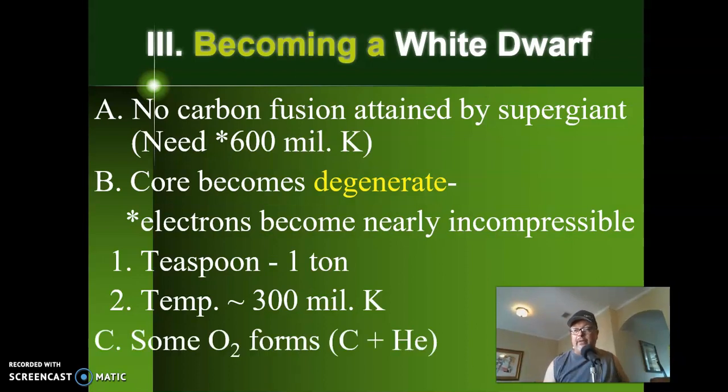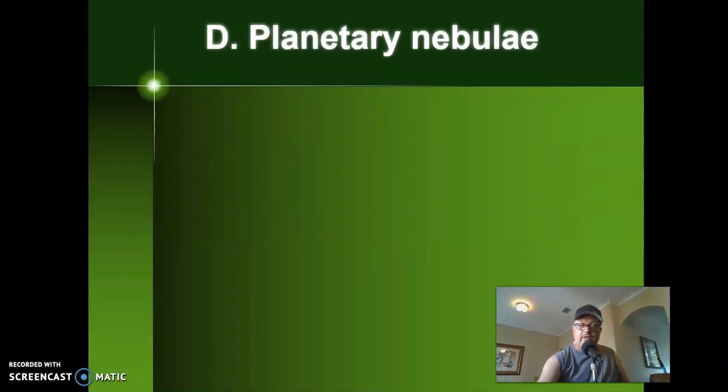Now, one interesting thing that can happen is that the core, which is made of carbon, you can have other types of fusion. It doesn't get hot enough for carbon-carbon fusion, but you could have, for example, carbon number six fuse with helium number two. And guess what? You created oxygen, which is number eight on the periodic table. So you can have some oxygen, some neon, some other elements that are created at that point, which is kind of interesting. So what's going to happen? Now the core is crushed down into this super hot, super dense ball. What about the rest of the star? That's the core. What about the rest of it?